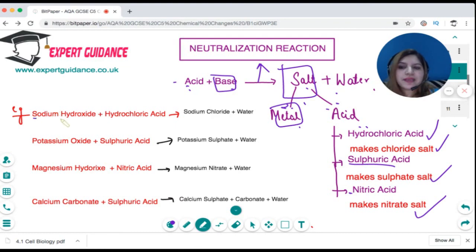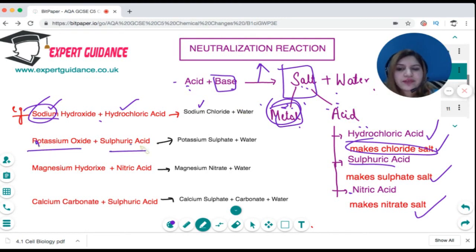For example, sodium hydroxide is a base and hydrochloric acid. It will form salt and water. Take the metal, sodium, and see the acid. Hydrochloric acid makes a chloride salt, so it's sodium chloride and water. Potassium oxide and sulfuric acid: metal is potassium, sulfuric acid makes a sulfate salt, so potassium sulfate and water. Magnesium hydroxide is magnesium nitrate plus water. Calcium carbonate is calcium sulfate plus water. If you have a carbonate, you'll have evolution of carbon dioxide gas. The rule for salt is the same.